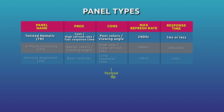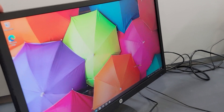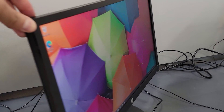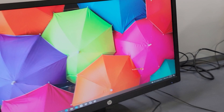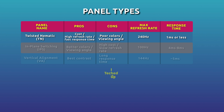First, we have TN — the oldest panel type since the introduction of LED backlit LCD monitors. The disadvantages are horrible color reproduction, a bad contrast ratio, and a limited viewing angle where the screen doesn't look right unless you're viewing dead center. So why are they still produced? They're cheap and budget-friendly, and most importantly they're great for gamers, having the fastest response time — usually around one millisecond or less — and can handle high refresh rates of up to 240Hz.